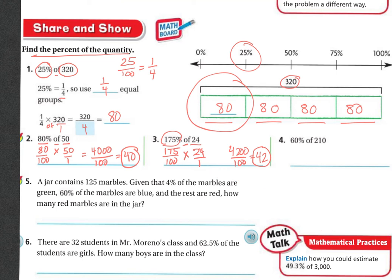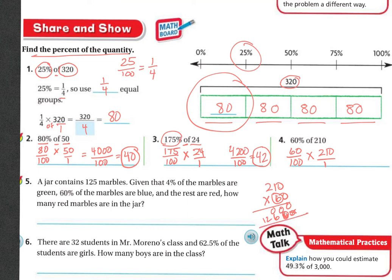Now 60% of 210. Change 60% to a fraction: 60 over 100, 'of' means times, then 210 over 1 because it's a whole number. So we do 60 times 210: 0 times 0 is 0, 0 times 1 is 0, 0 times 2 is 0. Then 6 times 0 is 0, 6 times 1 is 6, 6 times 2 is 12. Adding up: we get 12,600.